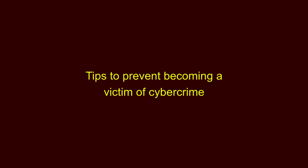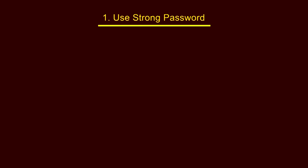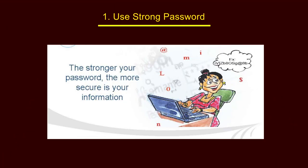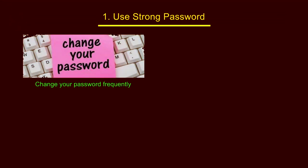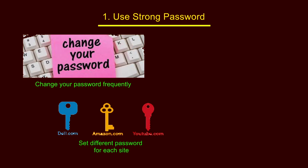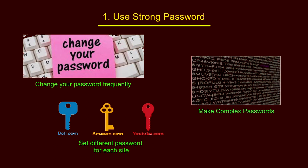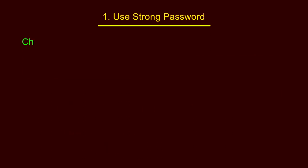Now we will discuss precautions to avoid being a victim of cybercrime — basically some do's and don'ts on the internet. The first precaution is to use a strong password. When we talk about passwords, we must remember three things: change your password frequently, maintain different passwords for each and every site, and use complex passwords.